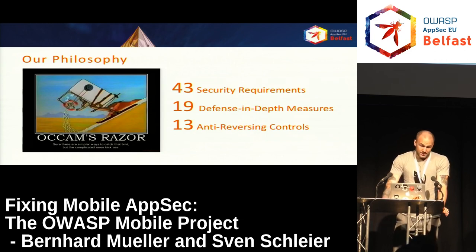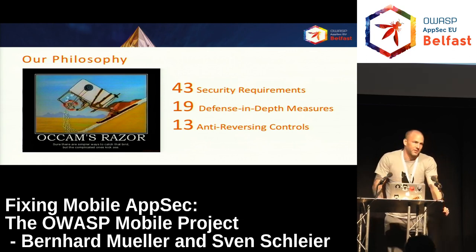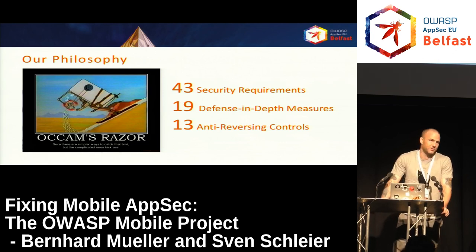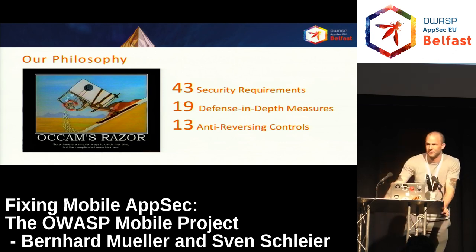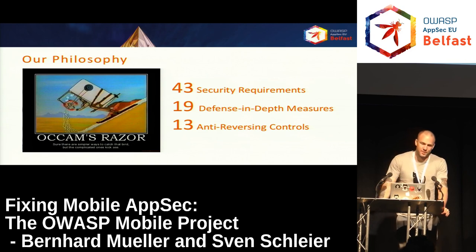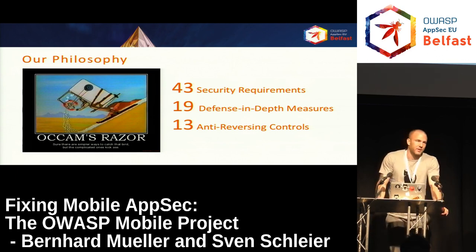The design philosophy we followed was to cut away everything that doesn't have a lot of benefit and is complex, and really reduce it to the basics that you need. We ended up with 43 security requirements — at some point we had about 80 and cut a lot away. So we have 43 basic requirements, 19 defense-in-depth measures that you can apply but are not 100% required, and we also have anti-reversing controls.